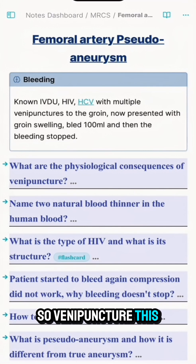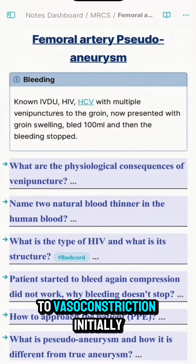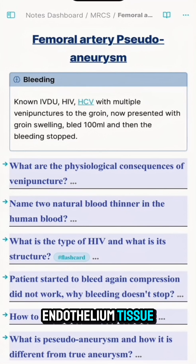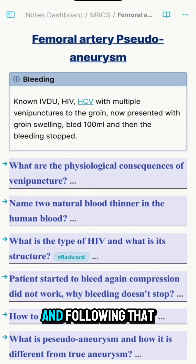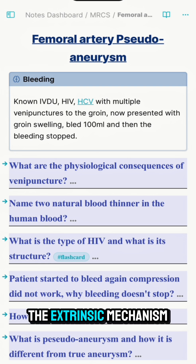Venipuncture causes endothelial injury, which initially leads to vasoconstriction and then activation of platelet plug formation. The platelets adhere to the endothelial tissue, forming a platelet plug. Following that, there is activation of the coagulation cascade, starting with both the intrinsic and extrinsic mechanisms coming together.